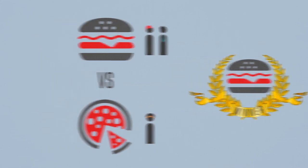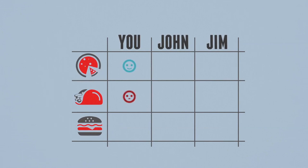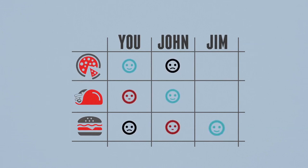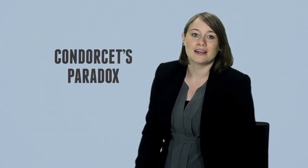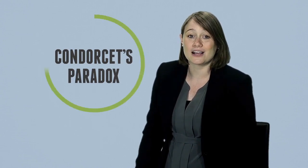What happened? Well, let's look at everyone's preferences again. The problem is no one ranks any of the options in the same order. So even though a vote between any two options yields a winner, when considering all three choices it's impossible to achieve a consistent outcome. This is called Condorcet's paradox.